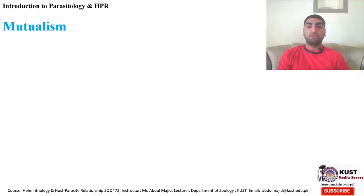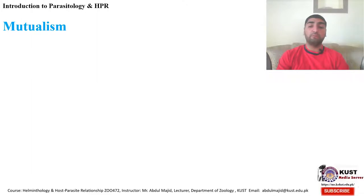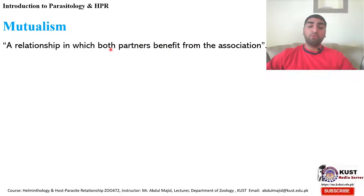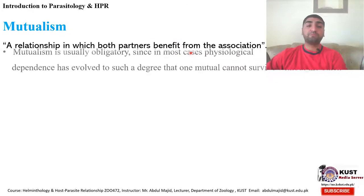In continuation of our previous lecture, we were discussing symbiosis and different types of symbiosis. Today we will discuss mutualism. Mutualism is a kind of relationship or association where both partners will get benefits from this association. It means that partner A and partner B both will be benefited from this relationship, from this association.